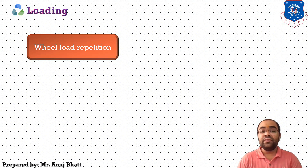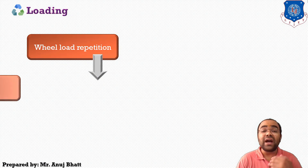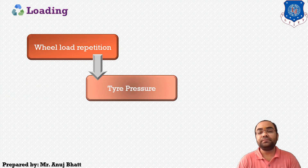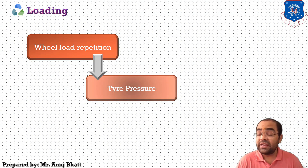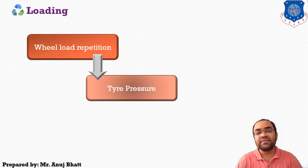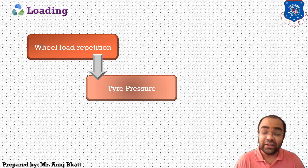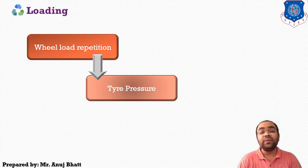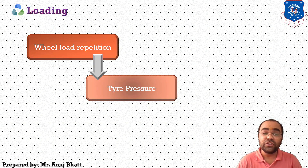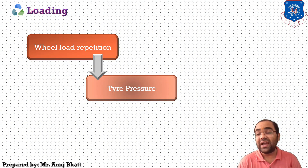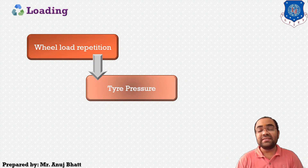The next factor related to loading is how much pressure is coming on the pavement — how tire pressure affects the pavement design. Tire pressure is a very important factor as it determines the contact area and also the contact pressure between the wheel and the pavement surface. Even though the shape of the contact area is elliptical, for the sake of simplicity in analysis, a circular area is generally considered when analyzing the rigid pavement.